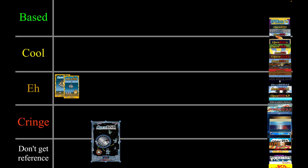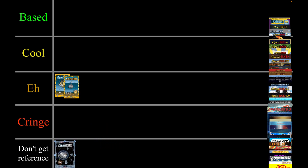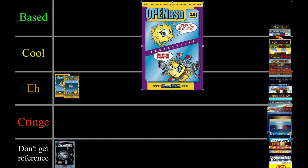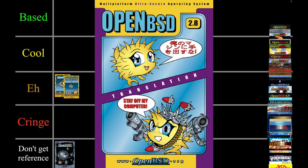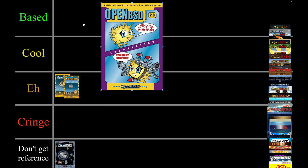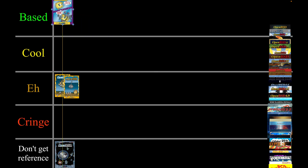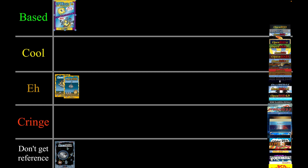Now they've started adding version numbers. This one is 2.8 and I have to say this one is probably the most based one out of all of them, so it is definitely going in the based category. I'm not going to lie, I don't know why it's lagging so hard — but right in the based category, let's make that big so everybody knows.